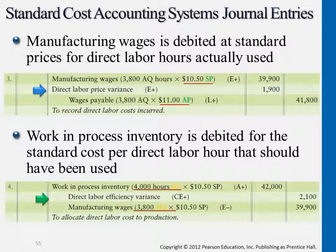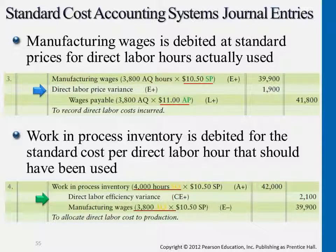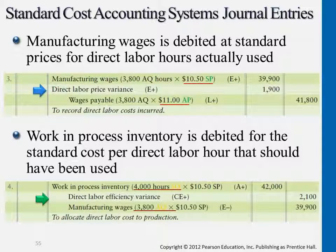Once the workers start working on the production line for certain products, we assign that cost to work in process. Remember, this account captures all the in-production, in-process costs. This tells us: favorable — specifically, $2,100 in favor. That's because of a 200-hour cost saving, and each hour based on standard price we saved $10.50. So altogether we had $2,100 as favorable. We have another account called direct labor efficiency variance, and this variance is favorable at $2,100, so we would credit it. Debit side is expense — additional cost occurrence. Credit side is cost saving — contra expense account.